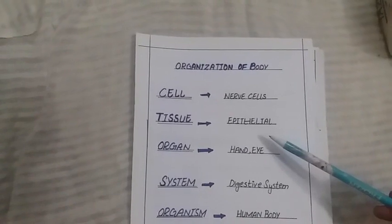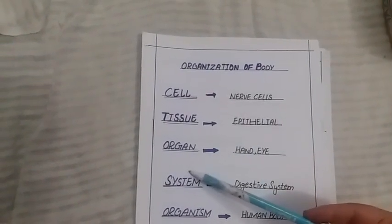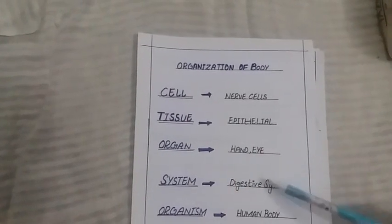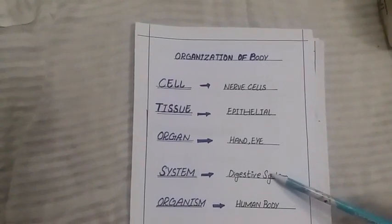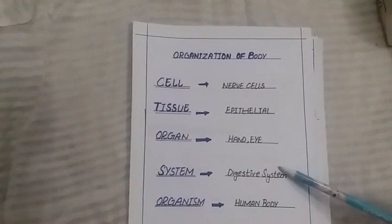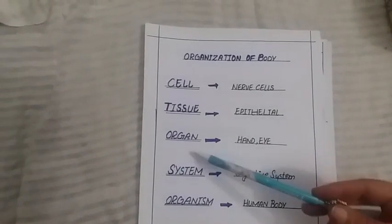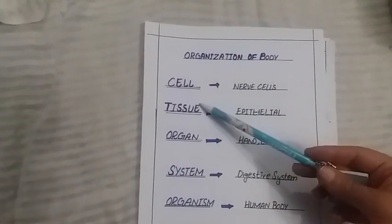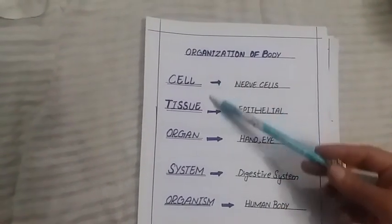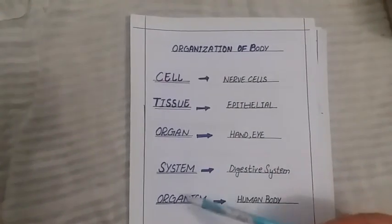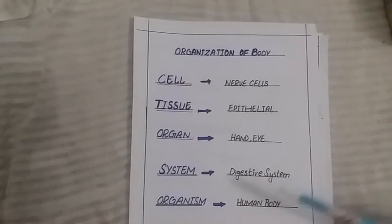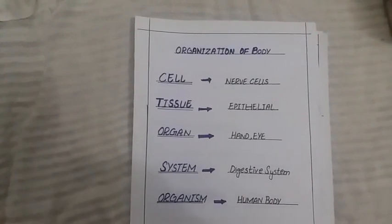Heart is an organ, hand is an organ. When these organs start doing their jobs and functioning properly, it forms a system. Examples of systems are the digestive system, reproductive system, circulatory system, and nervous system. We have eight to nine systems in the body. When cells combine to form tissue, tissue combines to form organ, organ combines to form system, and when all these start doing their work properly, an organism is formed. Examples are human body, plant body, animal body, and insects.